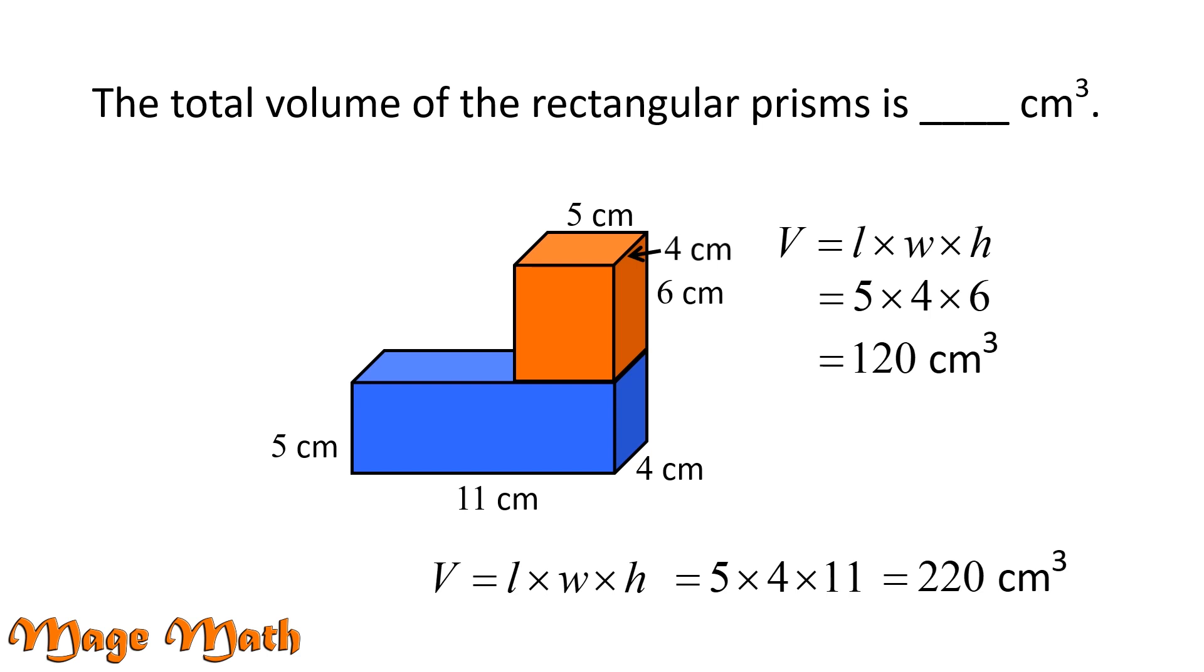Now we need to add. 220 plus 120 equals 340 centimeters cubed. The total volume of the rectangular prism is 340 cubic centimeters.